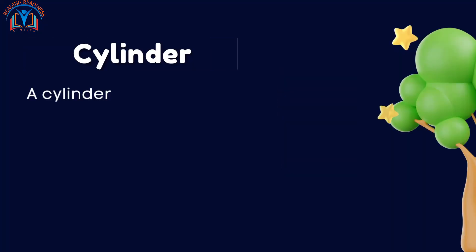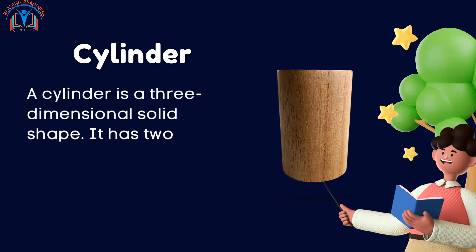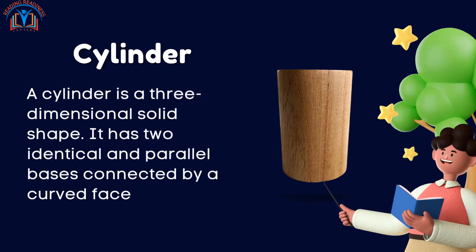Cylinder. A cylinder is a three-dimensional solid shape. It has two identical and parallel bases connected by a curved face that looks like a tube.